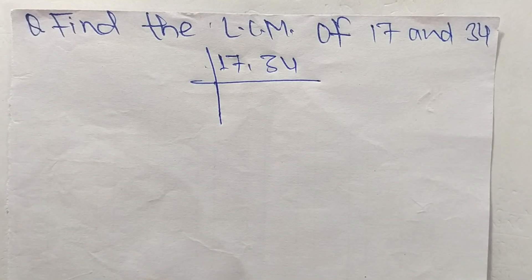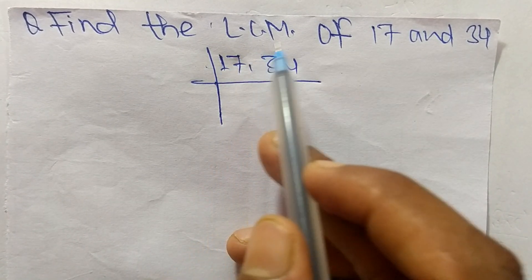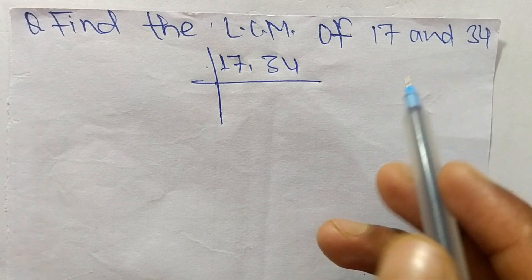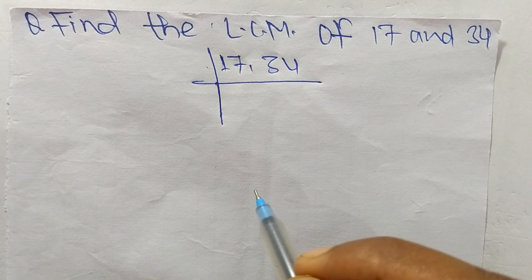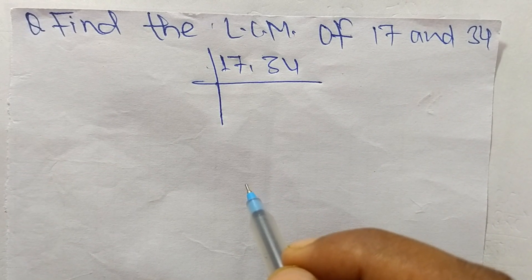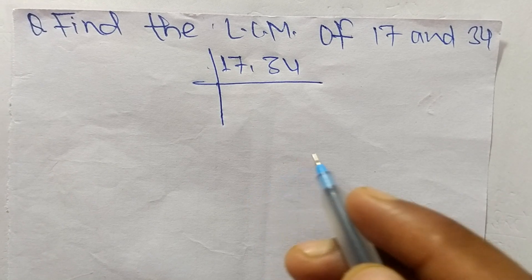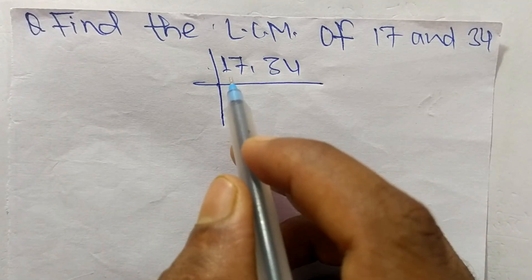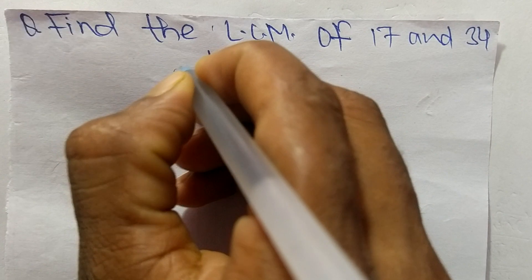So today in this video we shall learn to find the LCM of 17 and 34. To find LCM, first we have to choose the lowest number that can exactly divide 17 and 34. So the number is 17.